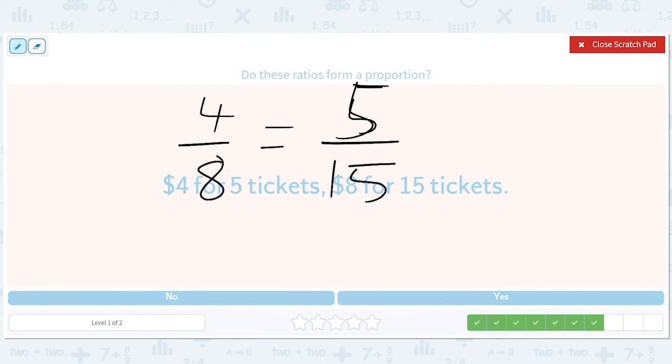you can go dollar to ticket equals dollar to ticket, or you can go dollar to dollar equals ticket to ticket. You just have to be consistent. Because when you cross multiply, you're going to get the same stuff.